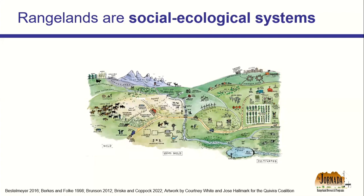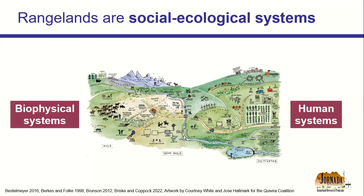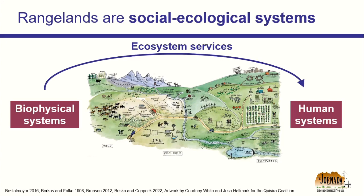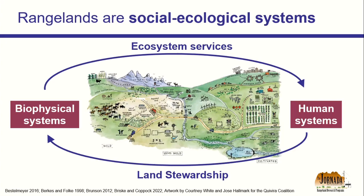In a nutshell, social ecological systems are complex systems in which the biophysical systems and the human systems are intricately linked and they depend on each other to function. In this simple example of a social ecological system on rangelands: biophysical systems provide ecosystem services for humans — carbon sequestration, biodiversity, clean water, viewsheds like the beautiful views you saw driving in here today. In turn, the humans in those social ecological systems steward those biophysical systems for the continued provision of those ecosystem services.